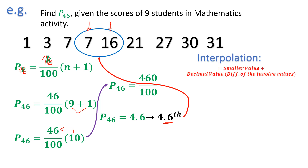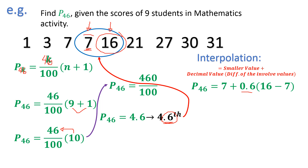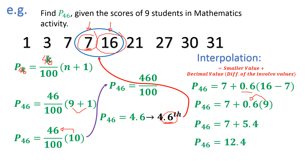To interpolate, use the smaller value, then add the product of the decimal value and the difference of the involved values. The smaller value between the fourth and fifth data points is 7. So P46 equals 7 plus 0.6 times (16 minus 7). That is 7 plus 0.6 times 9, giving 7 plus 5.4. Therefore, percentile 46 is equal to 12.4.